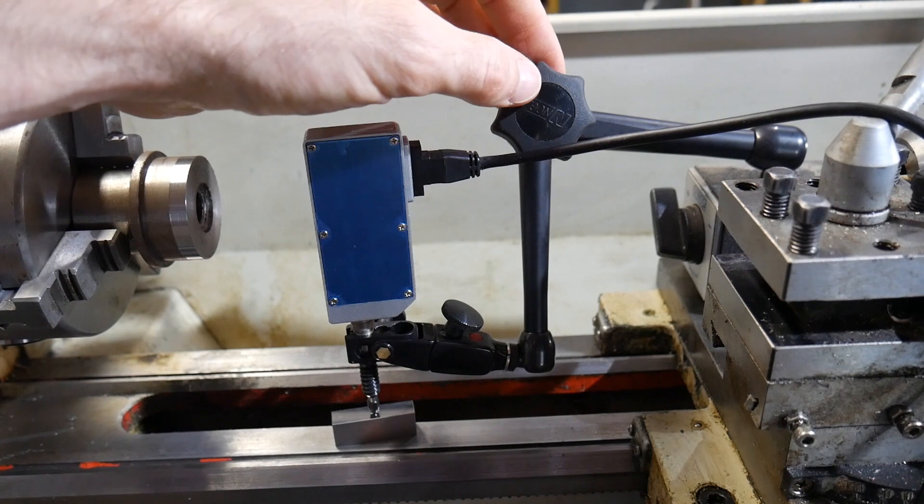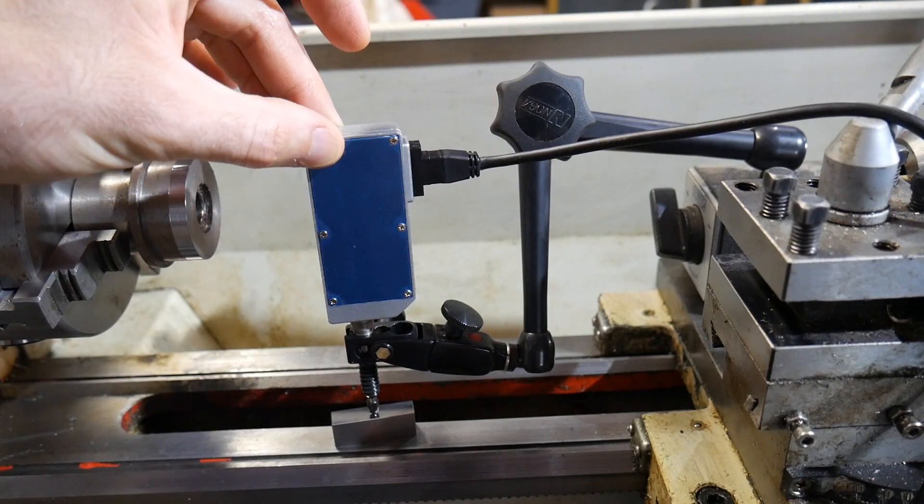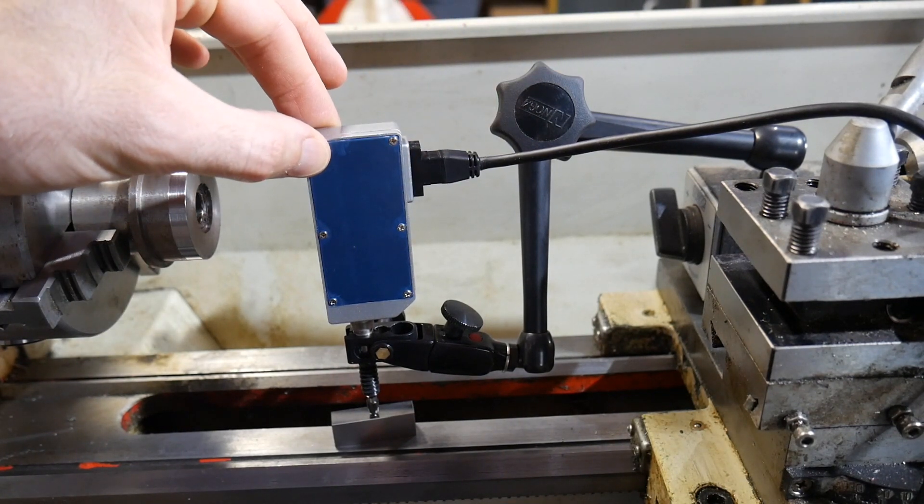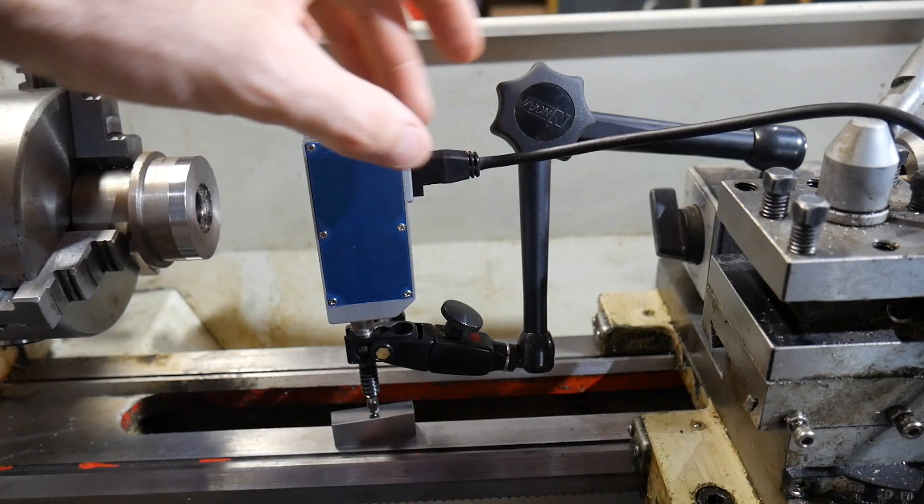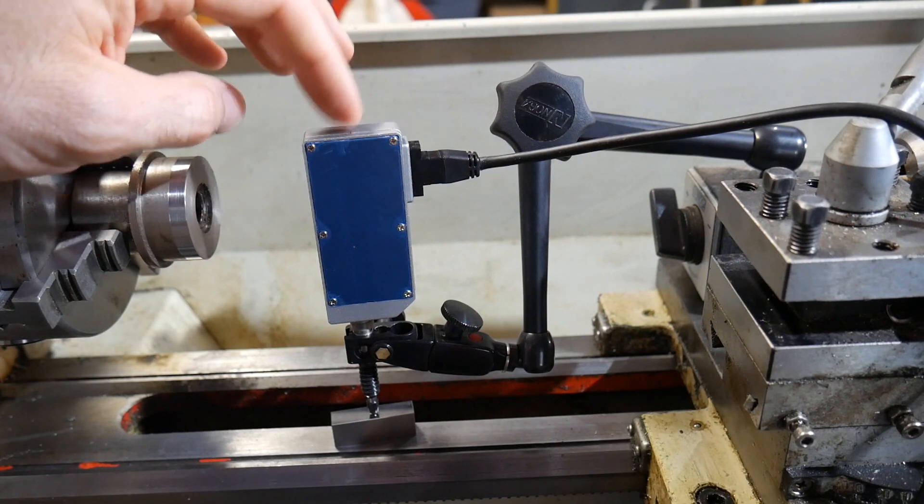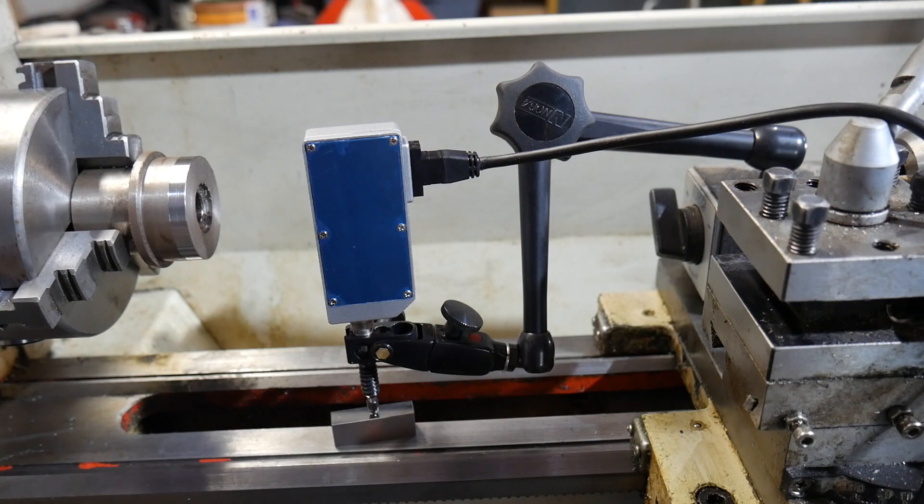This setup here with the dial indicator arm is good enough for dial indicators, but I definitely get the feeling that I should be much stiffer. I should build something more solid to really get the stiffness that we need to repeat on this type of scale.